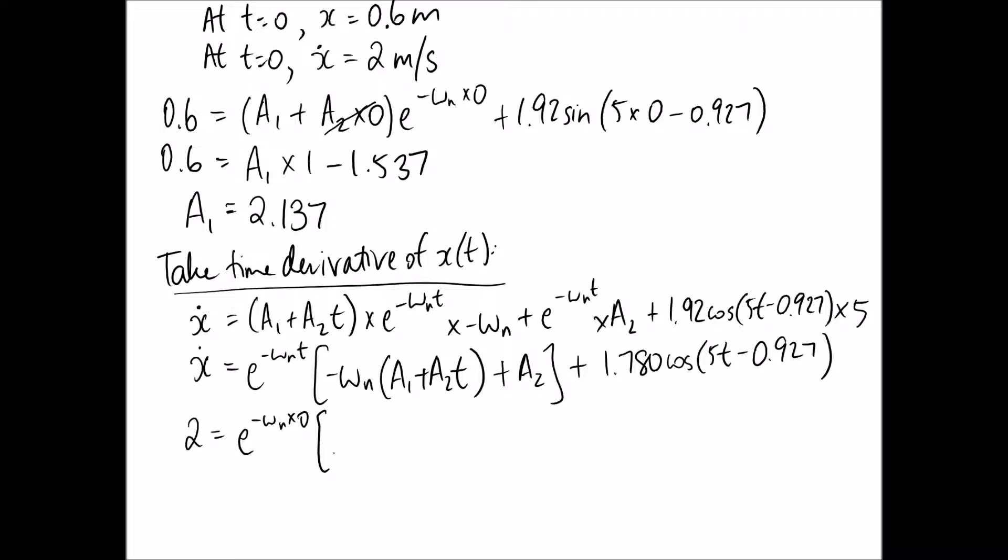So putting that in, now I'm only going to put in numbers for some of these because some of them are going to be dropped out of the equation. So we're going to get 2 equals e to the negative omega n times 0. Omega n is actually 10, and we've worked out A1 already.